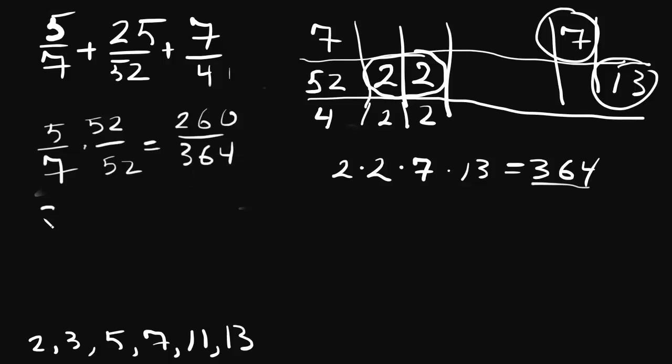And for 25/52. Well, 52 you get when you multiply 2 times 2 times 13, as we can see from this row in our prime factoring grid. So 2 times 2 times 13 are taken care of already. They're already built into 52.